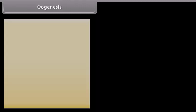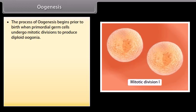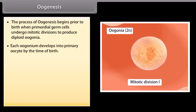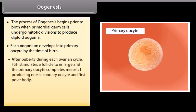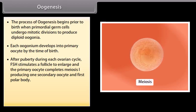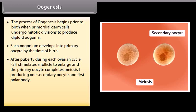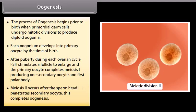Oogenesis: the process of oogenesis begins prior to birth when primordial germ cells undergo mitotic divisions to produce diploid oogonia. Each oogonium develops into a primary oocyte by the time of birth. After puberty, during each ovarian cycle, FSH stimulates a follicle to enlarge and the primary oocyte completes meiosis I, producing one secondary oocyte and the first polar body. Meiosis II occurs after the sperm head penetrates the secondary oocyte, which completes oogenesis.